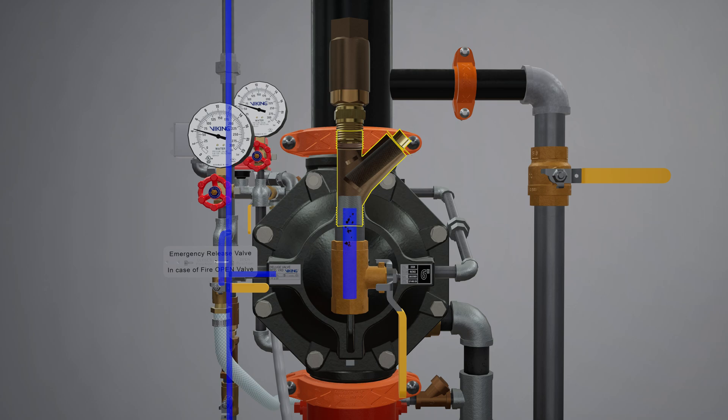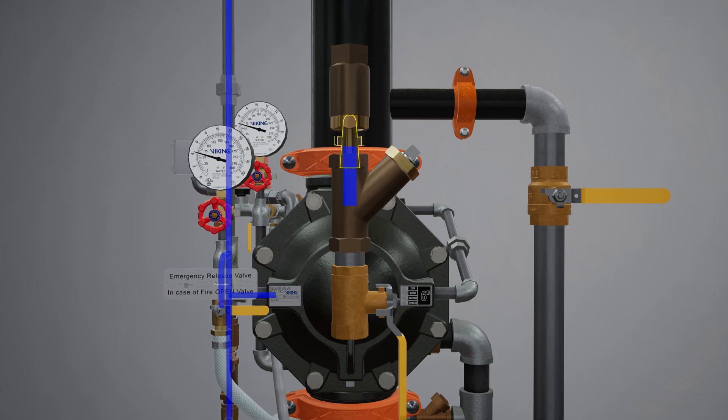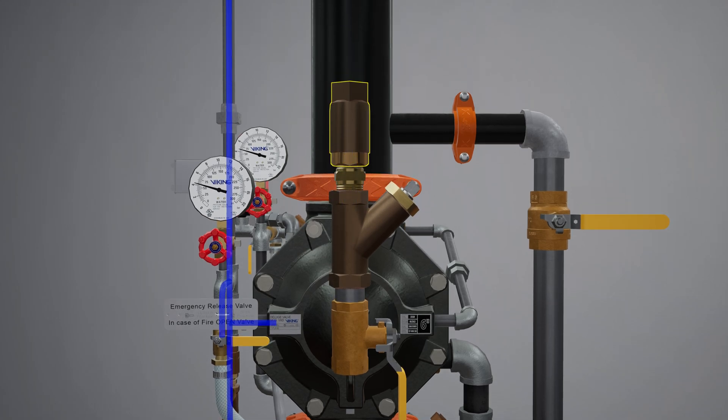The Y strainer keeps debris from entering the restricted orifice. The restricted orifice reduces the rate at which water can enter the prime chamber, ensuring that prime water will drain faster than it can be supplied. The check valve only permits water to enter the priming chamber, allowing prime chamber pressure to be maintained.